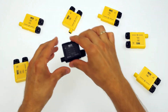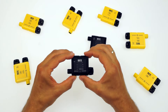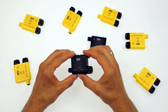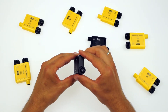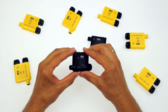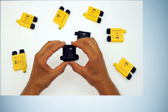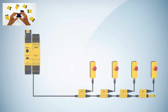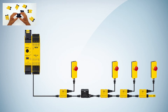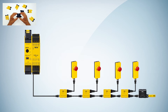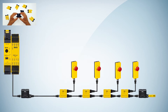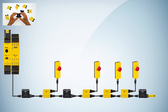Let me tell you more about the diagnostic node. There's a five-pin M12 standard connector on each side, so the diagnostic node can be placed at any position within a FlexiLoop cascade. You can also place as many diagnostic nodes as you like in each cascade, in addition to the 32 FlexiLoop nodes.